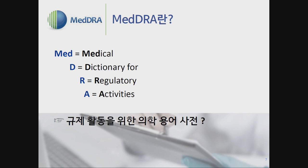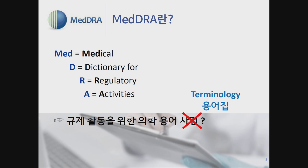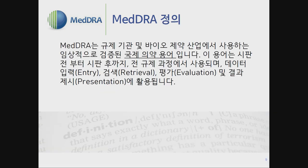MedDRA is an acronym for Medical Dictionary for Regulatory Activities, meaning the medical dictionary for regulatory activities to be conducted. One thing to pay attention to is the word 'Dictionary.' Usually a dictionary provides the definition of a word, however MedDRA does not provide definitions. Rather, it provides a structured data library of terminologies. So we call it terminology rather than a dictionary — it is more of a terminology than a dictionary.